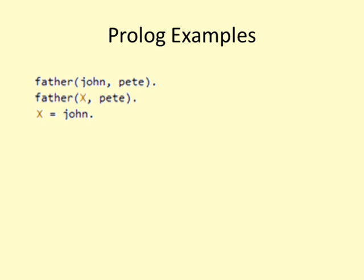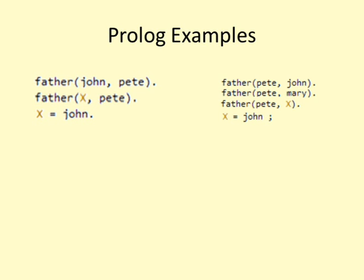Another example: given the facts father(Pete, John) and father(Pete, Mary), we can ask who are the children of Pete by writing father(Pete, X). This query has two possible answers, so when Prolog gives the first answer X = John, we press semicolon and Prolog gives another answer X = Mary.